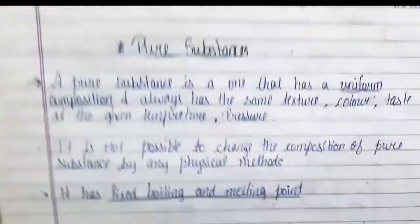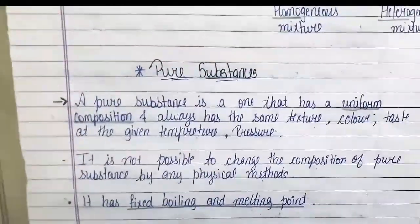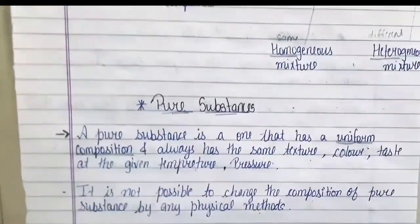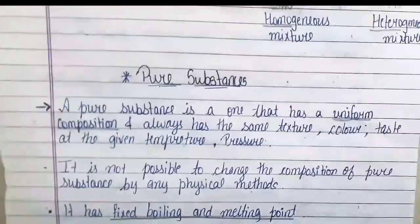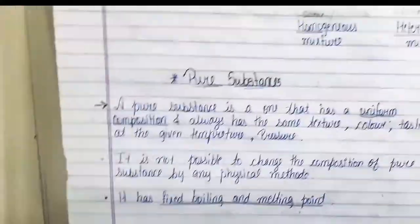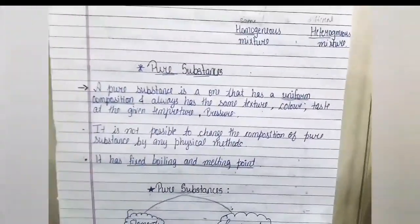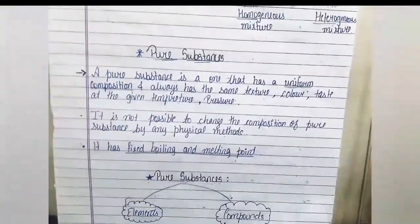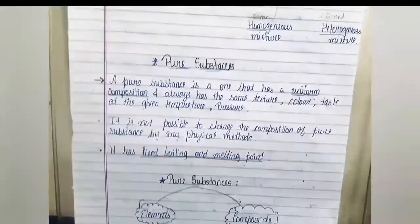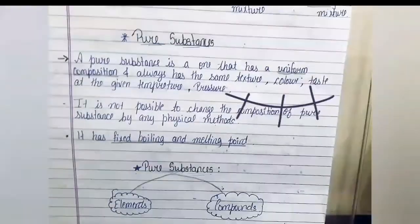Pure substance has uniform composition, just as homogeneous has uniform composition. So you need to remember this point: pure substance is a homogeneous mixture. It always has the same texture, color, and taste at the given temperature and pressure.